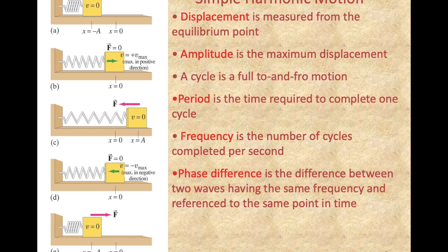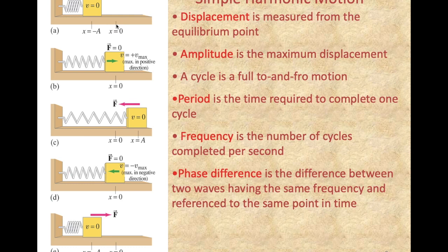Here is some terminology you will need for understanding simple harmonic motion. Displacement — measured in meters from the equilibrium point — is the good old displacement from mechanics. Amplitude is the name given to the maximum displacement; it is also a measure of length. The displacement of a mass in SHM can vary between a negative maximum and a positive maximum as it goes back and forth. At equilibrium, displacement is zero; at maximum on each side, it equals the negative or positive amplitude.